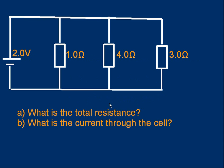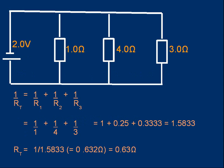Let's use the formula with an example: three resistors in parallel — 1 ohm, 4 ohms, and 3 ohms — connected to a 2-volt supply. Two questions: what's the total resistance, and what's the current through the cell? I highly recommend you pause the video and try this yourself before I give the answer. To find the total resistance: 1/RT = 1/1 + 1/4 + 1/3.